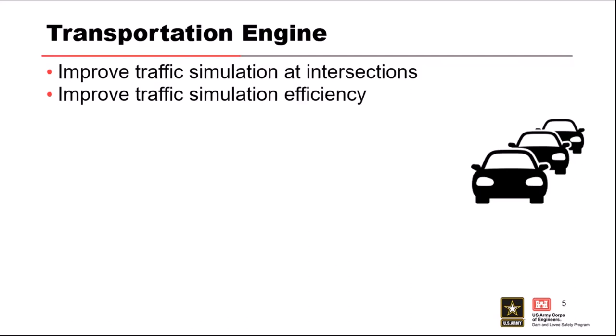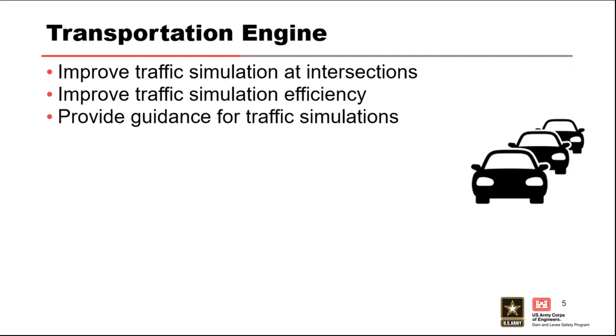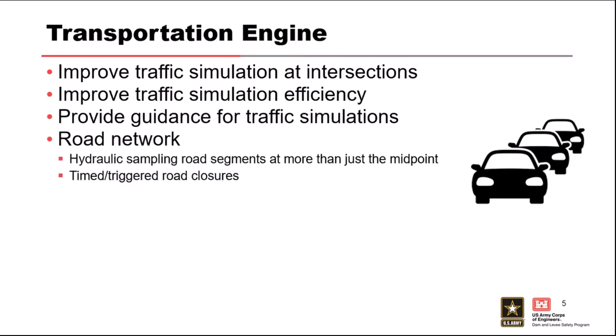Improved traffic simulation efficiency — Deming is a relatively small data set, so we ran it with traffic simulation and it ran relatively quickly. But if you have a population in the millions and you're loading them all onto the network, it can really take a long time to run. On the road network, hydraulic sampling currently only happens at the center, requiring us to break up road segments for better hydraulic definition. We want to sample at multiple locations along the road so vehicles check hydraulics at various points rather than just the center.